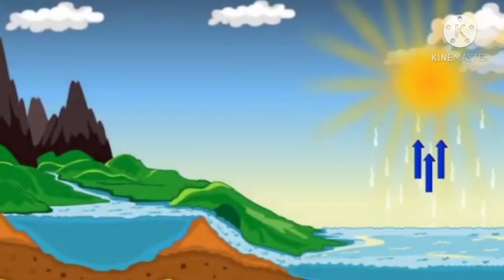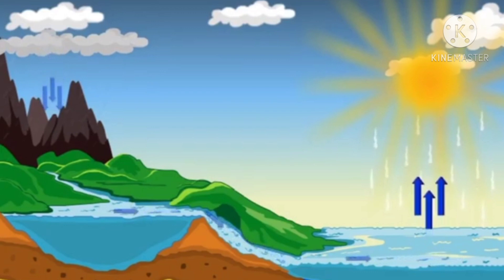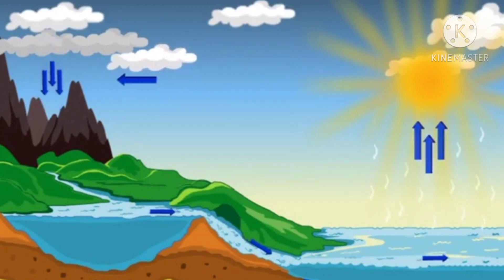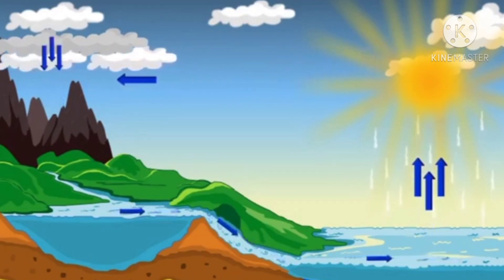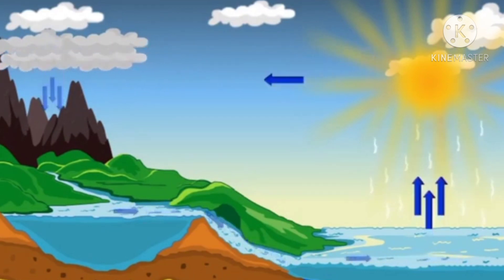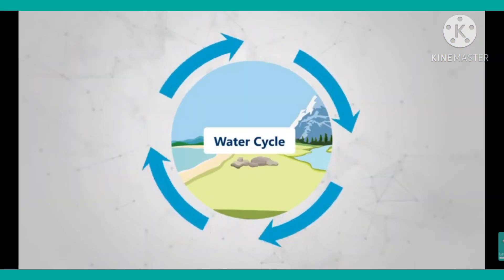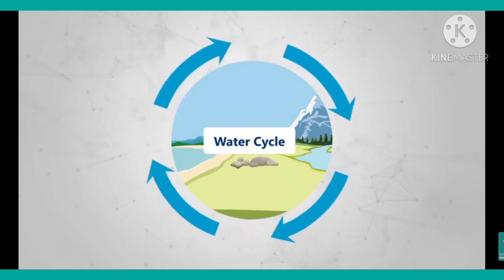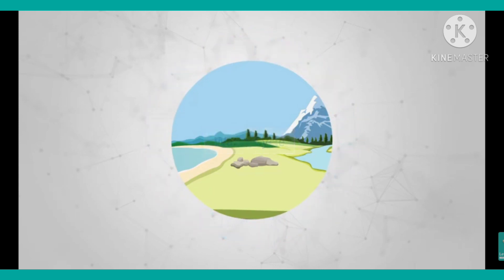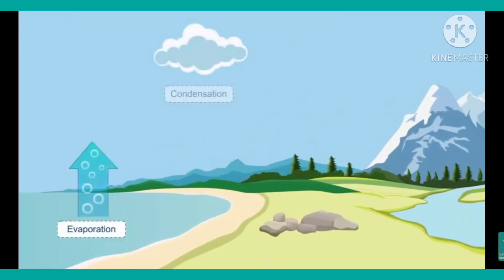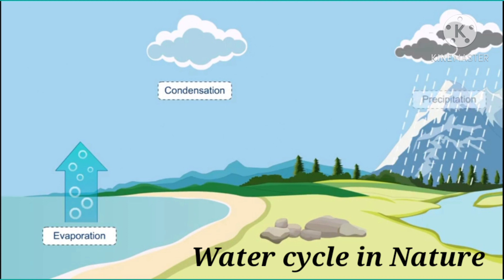From there, it again gets evaporated by the heat of the sun, and the whole process begins again. The cyclic process of evaporation of water from the earth's surface followed by its condensation is called the water cycle in nature — evaporation followed by condensation.